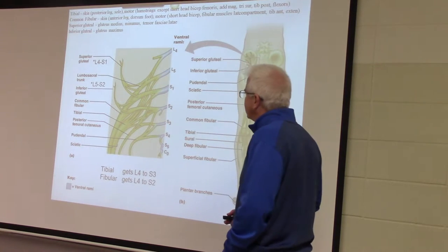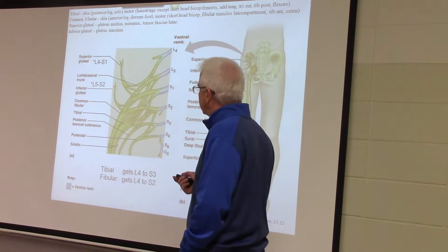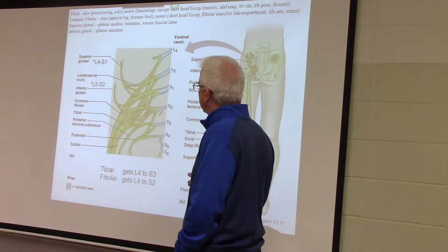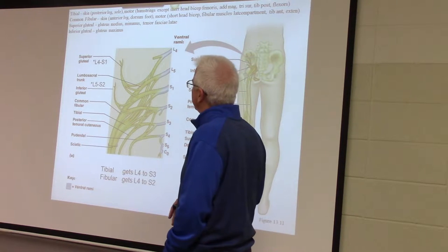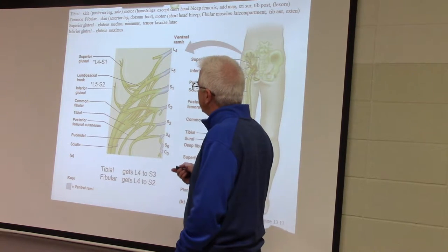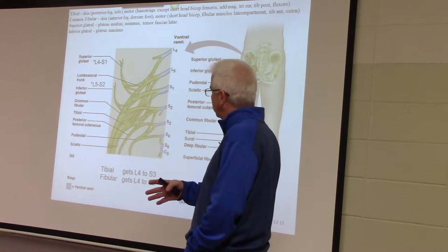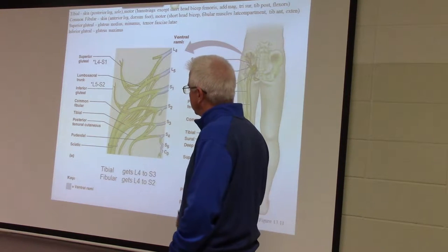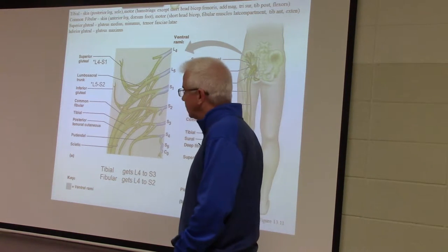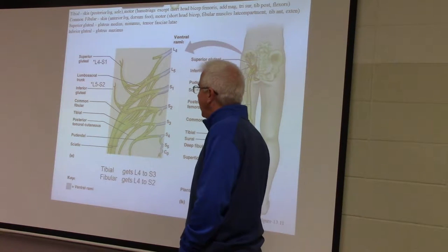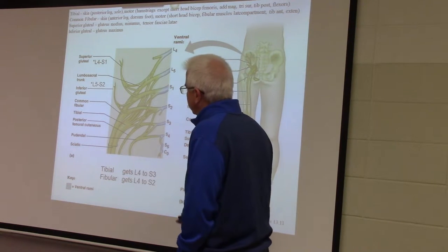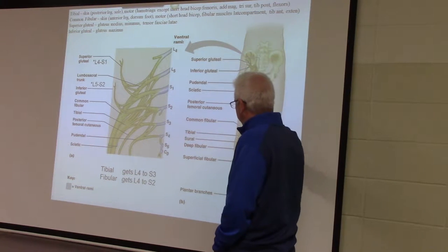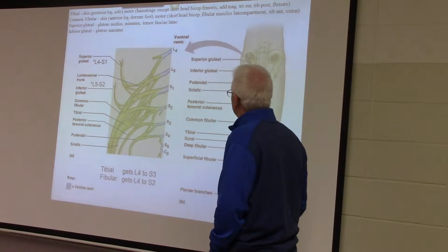So this is sacral plexus stuff, and we looked at the gluteal muscles and talked about the superior gluteal nerves last time to innervate those. We talked about lumbar plexus also last time, so we saw the femoral and obturator innervation of the quadricep muscles and the adductors. And today we've turned around to the back of the leg, and we're talking about the largest nerve in the body called the sciatic nerve.